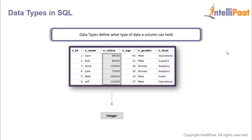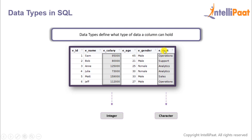Let's take this e-salary column for example. We see that the first entry is of integer type, the second entry is also of integer type. Similarly, all the entries of this e-salary column are of integer type. Now let's take this department column — here we see that all the entries of this particular column are of character type.